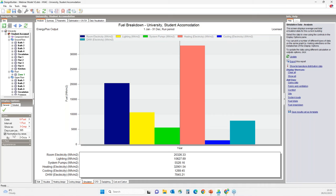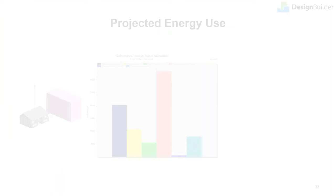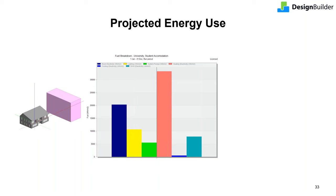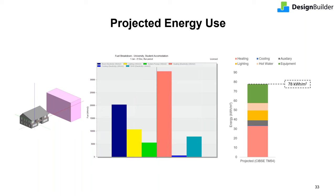This is the projected energy use based on realistic operating conditions and represents the baseline energy use. The energy use projection calculated in accordance with TM54 guidelines with building-specific inputs results in a total projection of 78 kWh per meter square per annum. This projection accounts for all anticipated energy uses in the building rather than just the regulatory loads or central plant equipment, and therefore provides a holistic view of the building's performance.